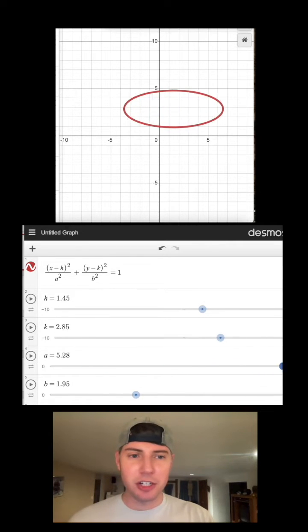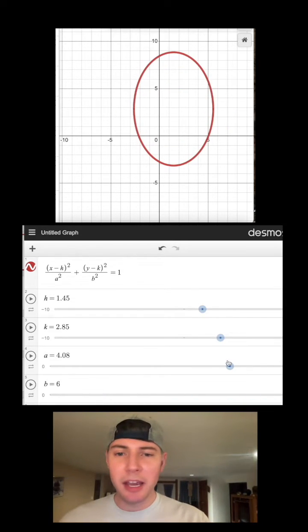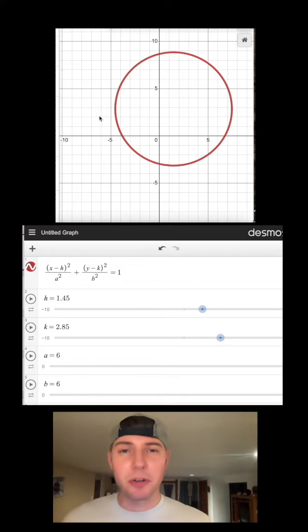And then b is the radius in the y direction, so you make it larger in the y direction or down. If you make both a and b equal to 6, then it is a perfect circle.